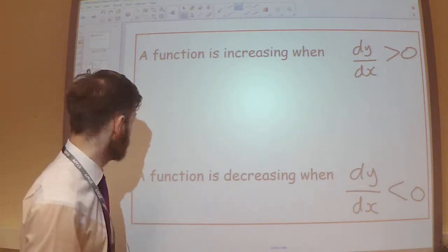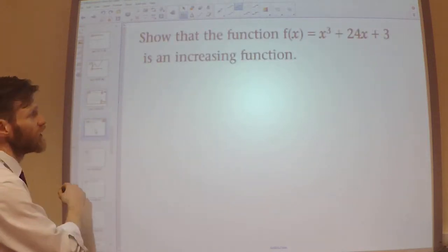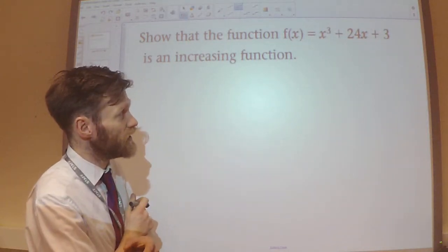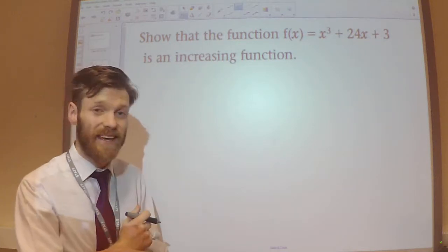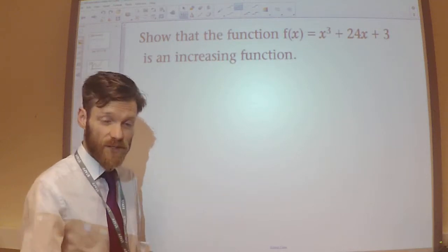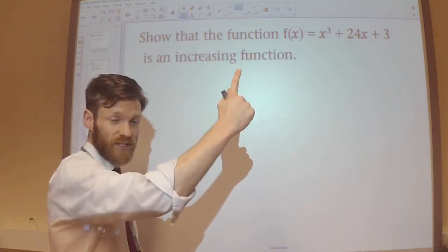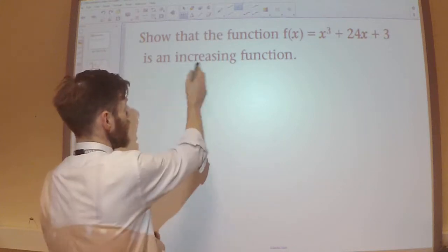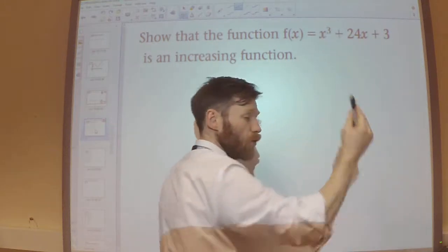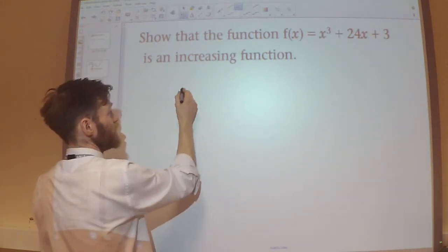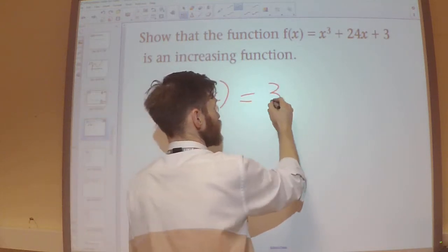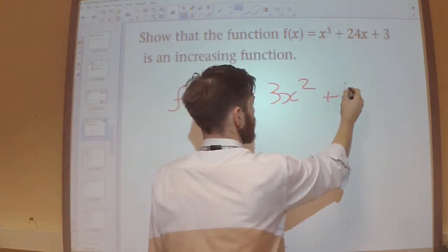So let's have a look at a couple of examples. This question says: show that the function x cubed plus 24x plus 3 is an increasing function. If it's an increasing function, that means it's always going to be going up — its gradient will always be positive. So what I'm trying to do is show that the gradient here will always be positive. Let's differentiate this first of all, and we'll get 3x squared plus 24.